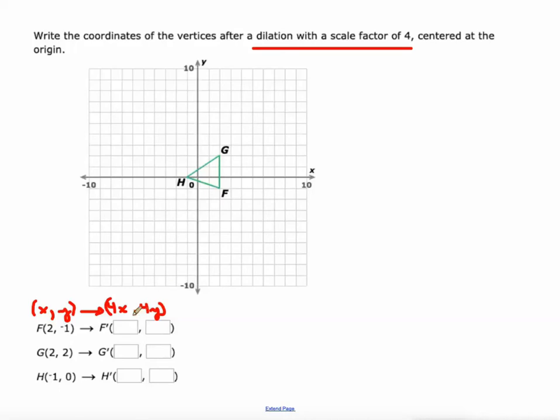Alright, so let's do it. 2 times 4 is 8, negative 1 times 4 is negative 4, 2 times 4 is 8, 2 times 4 is 8, negative 1 times 4 is negative 4, and 0 times 4 is still 0.